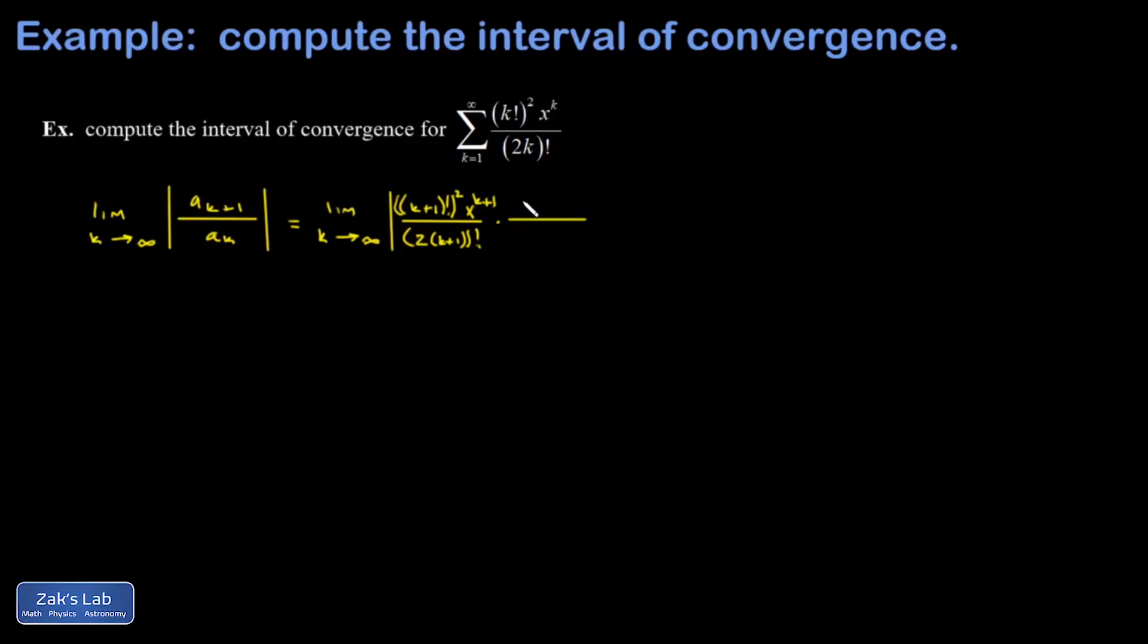Then we're dividing by the kth term, but that's the same as multiplying by its reciprocal. So I have 2k factorial over k factorial all squared times x to the k.